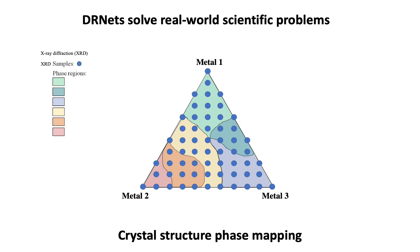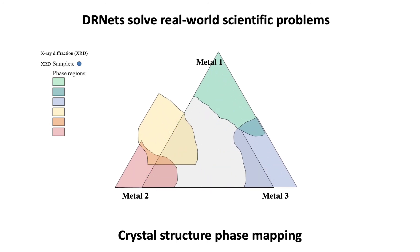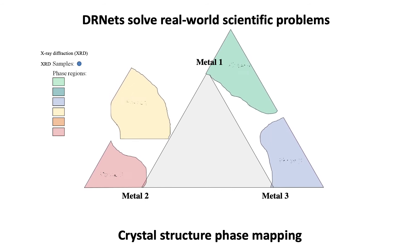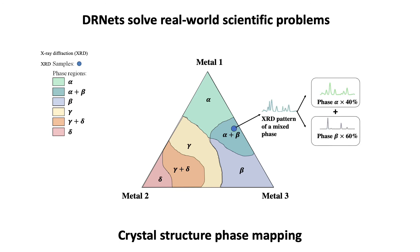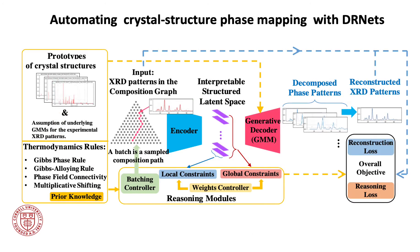More importantly, DR Nets solve real-world scientific problems, such as crystal structure phase mapping, which involves identifying and demixing the crystal structures, or phases of materials, given a collection of X-ray diffraction patterns. DR Nets do not require labeled data to train on for automating crystal structure phase mapping. DR Nets compensate for the lack of training data by combining deep learning with reasoning about crystal structures and thermodynamic rules.